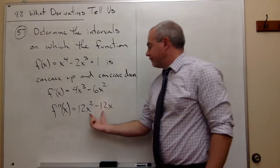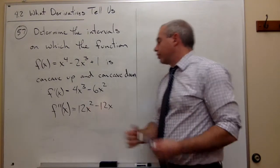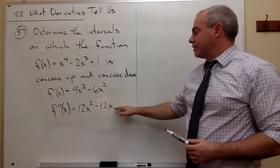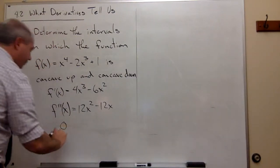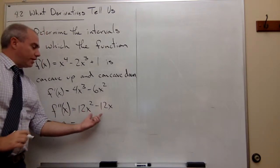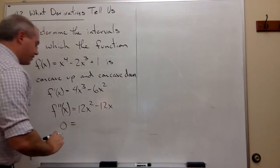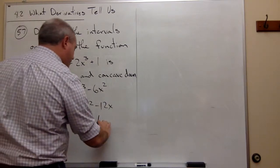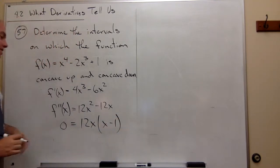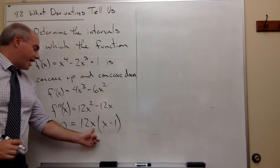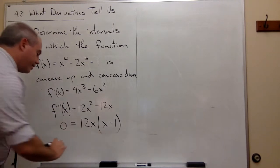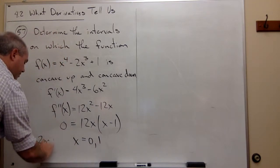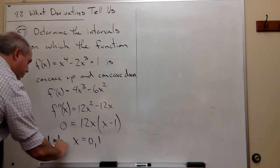So here's my second derivative, and I want to find the second order critical values — in other words, where is this equal to 0. Setting it equal to 0, I get 0 equals 12x squared minus 12x. I can factor out 12x to get 12x times x minus 1. So x equals 0 or x equals 1. These are my second order critical values.